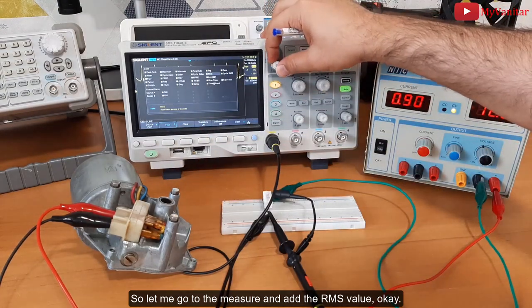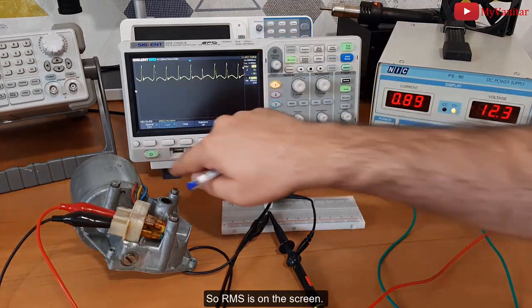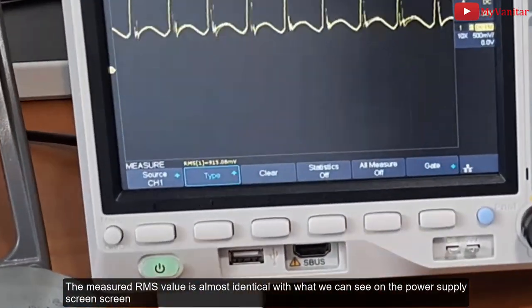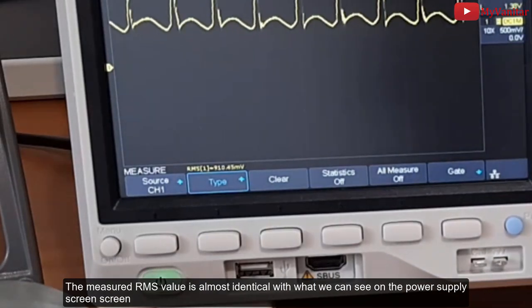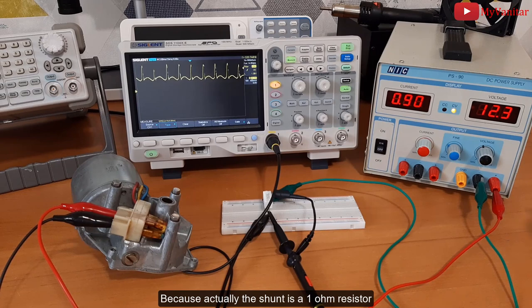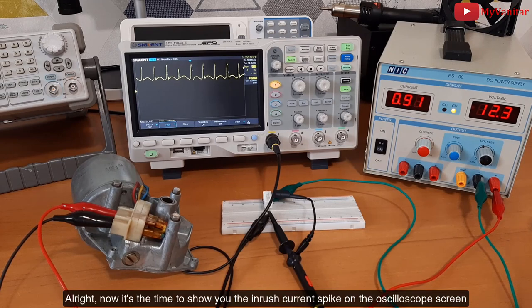RMS value. Okay, so RMS is on the screen. The measured RMS value is almost identical with what we can see on the power supply screen, because actually the shunt is a 1 ohm resistor. All right, now is the